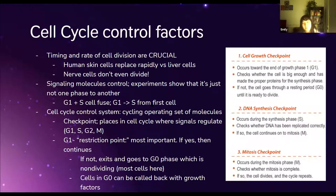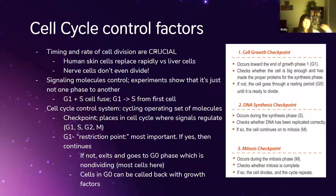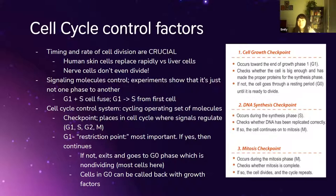An example of non-dividing cells is nerve cells. When you're born, you have three germ layers — layers of tissue you get from your mother as a fetus — and one of those layers turns into nerve cells. But you don't get more nerve cells over time, which is why some diseases are neurodegenerative: you can't really cure them because you can't get more nerve cells.